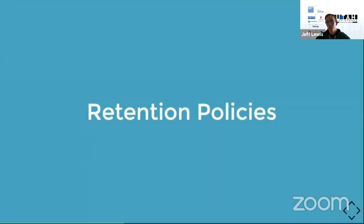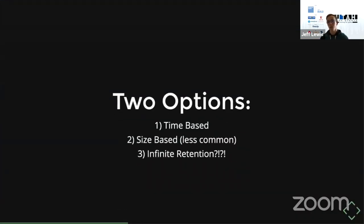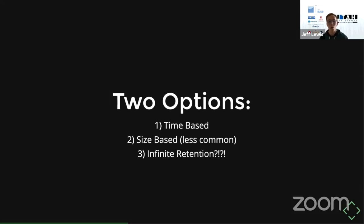Now let's talk about retention policies in Kafka. A retention policy determines how long records stay in Kafka — are you going to keep records forever, or do you have some cleanup policy? There are two main options. The first is time-based, where you set a configuration like one year or seven days, and a message will live inside Kafka for that period of time before being deleted from the brokers.